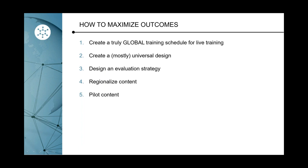Some tips for maximizing outcomes for both the organization and learners: these are the five things that matter most when designing global initiatives. First, creating a global training schedule. Second, a mostly universal design. Third, an evaluation strategy. Fourth, we need to regionalize content — not just translate, but regionalize. And fifth, piloting is key: roll it out once or twice as needed, but ensure we're testing that content and that it's working for all audiences in all different regions.